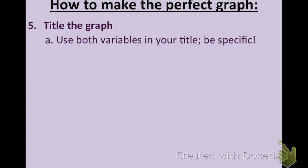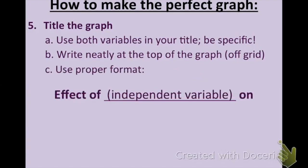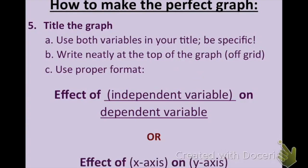And finally, you must title your graph. And again, graph is not a good title. You have to have a correct title. You use both variables in your title and you are very specific. You want to write neatly at the top of the graph, not on the grid. And you want to use the proper format: effect of independent variable on dependent variable, or you can say effect of x-axis on y-axis. If you go back a couple pages to our practice one, it had the temperature and the amount of algae. So it would be the effect of temperature on the amount of algae present, or something like that, is what you would use for that example data table that we had.